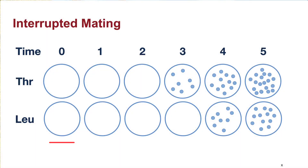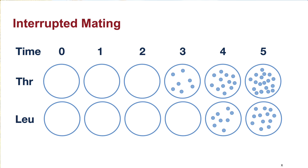As you can see in the figure, at time zero there are no colonies; at time point one still no colonies; but at time point three we suddenly have colonies on the plate containing added threonine. This tells us that the recipient has now acquired the gene to make leucine, since the plate only has threonine added and the bacteria can grow in the absence of leucine. This means the leu gene must come before the threonine gene. This is confirmed at the next time point when the bacteria start growing on the plate with leucine added, since they can now make threonine. By plotting the number of colonies and extrapolating back to the time axis, it is possible to assign a time in minutes as the relative position of genes on the bacterial chromosome.